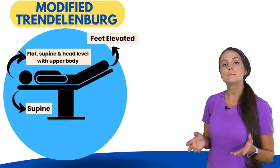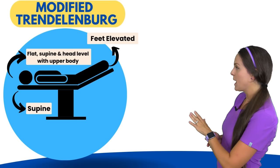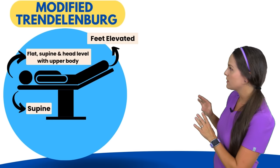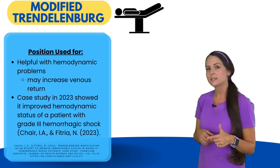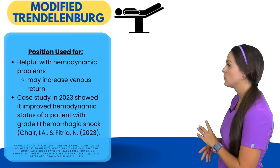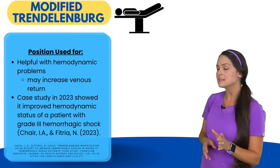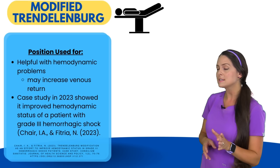Lastly is the modified Trendelenburg position. The patient is flat in the supine position with the head level with the upper body, but the feet are elevated — the foot of the bed angle is increased. This position can be helpful with hemodynamic problems because it can potentially increase venous return by elevating the legs. A 2023 case study showed improvement in hemodynamic status of a patient with grade three hemorrhagic shock using this position. That wraps up this video — don't forget to check out the other videos in this series.